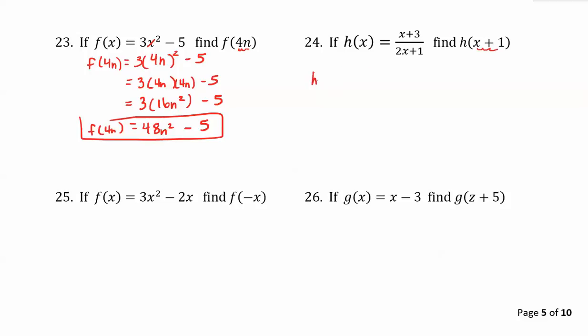So h of x plus 1 on top of the fraction. Instead of x plus 3, we get what plus 3? Well that becomes x plus 1 plus 3. On the denominator, instead of 2 times x plus 1, we have 2 times what plus 1? That becomes 2 times x plus 1 plus 1.